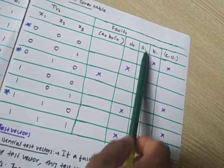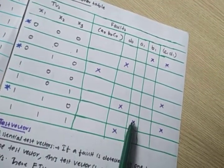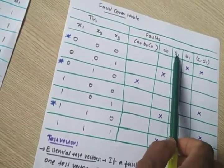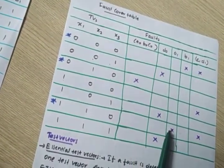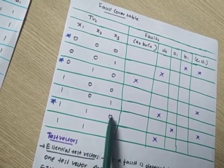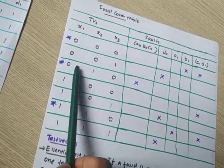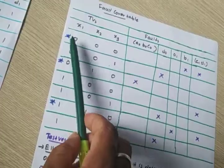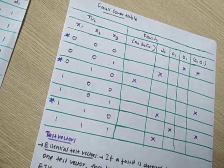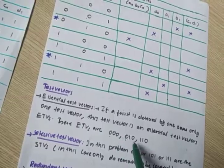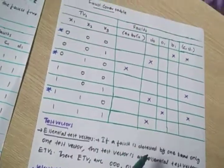Now consider A0, B0, C0: this faulty condition can be identified only with the help of test vector 0,1,0. So 0,1,0 is an essential test vector. Similarly, A1 fault can be identified only with the help of 1,1,0, so 1,1,0 is an essential test vector. Essential test vectors are denoted by a star.